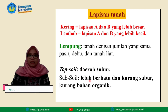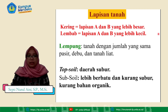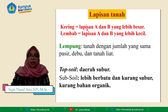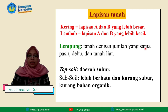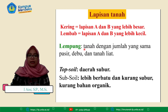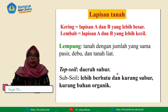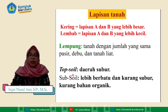Lapisan B adalah subsoil atau zona iluviasi yaitu akumulasi material yang tercuci dari A, warnanya merah atau coklat atau abu-abu, dapat mengandung mineral larut tetapi sedikit bahan organik. Lapisan C merupakan campuran tanah dan batuan dasar, terlapuk oleh asam, aksi beku, akar dari atas, dan transisi. Dalam keadaan kering lapisan A dan B yang lebih besar sedangkan dalam keadaan lembab lapisan A dan B yang lebih kecil. Lempung adalah tanah dengan jumlah yang sama pasir, debu, dan tanah liat. Umumnya daerah topsoil ini adalah daerah yang subur, sedangkan daerah subsoil biasanya lebih berbatu dan kurang subur serta kandungan bahan organik yang kurang.